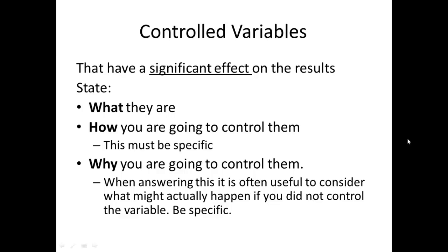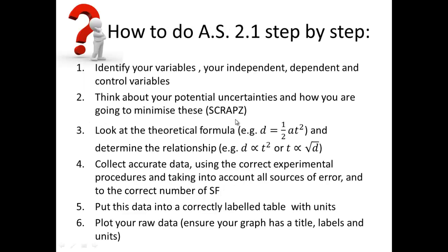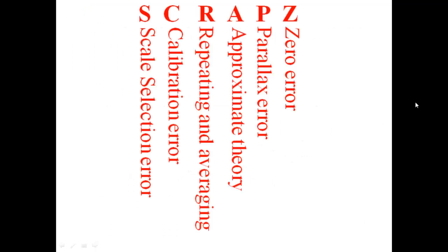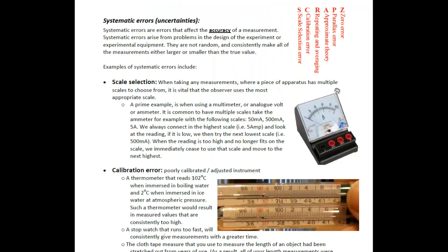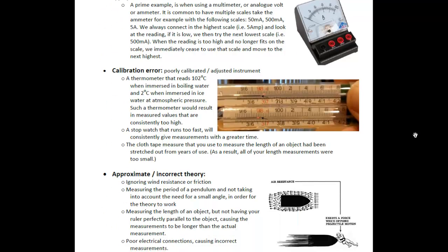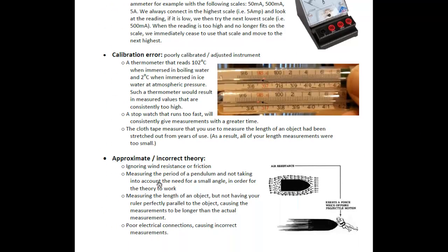You need to explain why you need to control them and how you need to control them. Most variables need to be controlled. Step number two: you need to think about SCRAPS - we're dealing with uncertainty, you need these for merit. So we've got scale selection error, calibration error, repeating and averaging, approximate theory, parallax, and zero error. You have this worksheet that goes through SCRAPS.